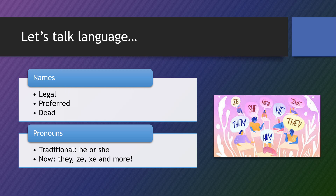Let's talk about language. When dealing with names, there are different types: legal, preferred, and dead, to name a few. When working with people, we never want to ask them what their real name is — we want to use terms like legal name and preferred name. The legal name will often be on someone's documentation, but preferred name is the name that someone would like you to call them. Dead name refers to what a person does not want to be called — it may be a name they had in the past that they no longer use. We never want to address someone by their dead name, and we also do not want to refer to someone's name as a dead name. That is up to the individual to tell you themselves if they choose to.